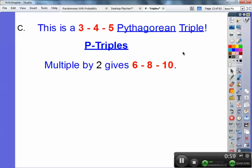So if I multiply 3, 4, 5 times 2, here's 3 times 2, here's 4 times 2, here's 5 times 2, and it turns out if I do 6 squared plus 8 squared equals 10 squared, it makes it true. So 6, 8, 10 is also a P-triple.